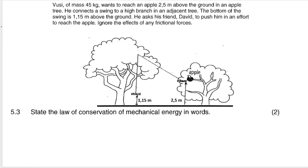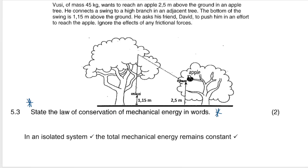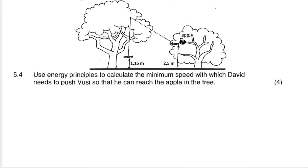State the law of conservation of mechanical energy — this is a super important definition they can ask all the way up to matric. The definition is: the total mechanical energy in an isolated system remains constant. You must say 'total,' mention 'mechanical energy,' and say 'isolated system.' Do not say 'closed system' — isolated is for physics. 'Remains constant' or 'stays the same' is perfect.